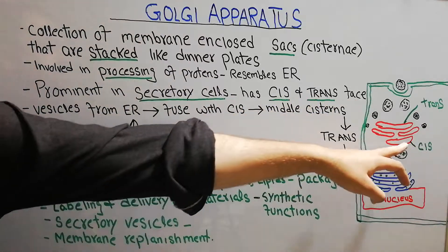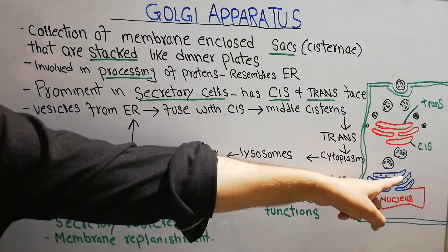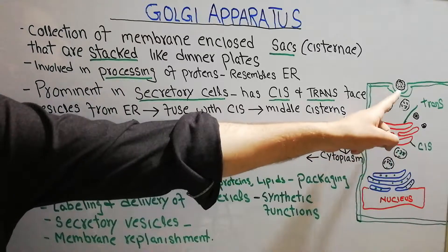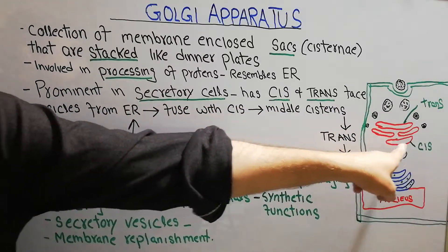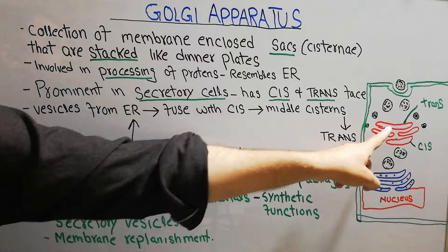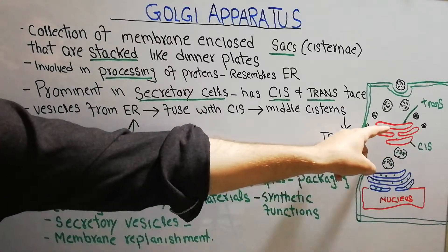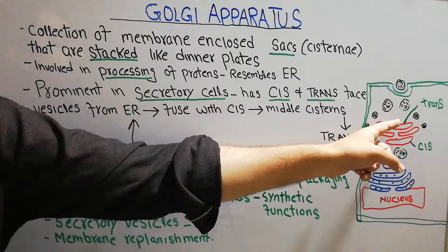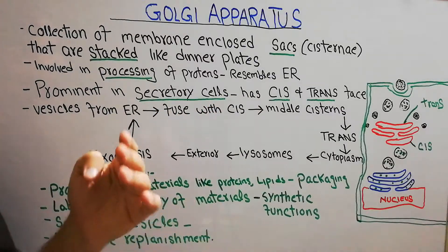Golgi apparatus has a cis phase and a trans phase. The phase facing towards the endoplasmic reticulum is known as the cis phase, and the phase facing towards the cytoplasm is the trans phase. The cis is convex in structure and the trans is concave. The cis phase receives vesicles from the endoplasmic reticulum; these vesicles are then processed in the Golgi apparatus and released through the trans phase.